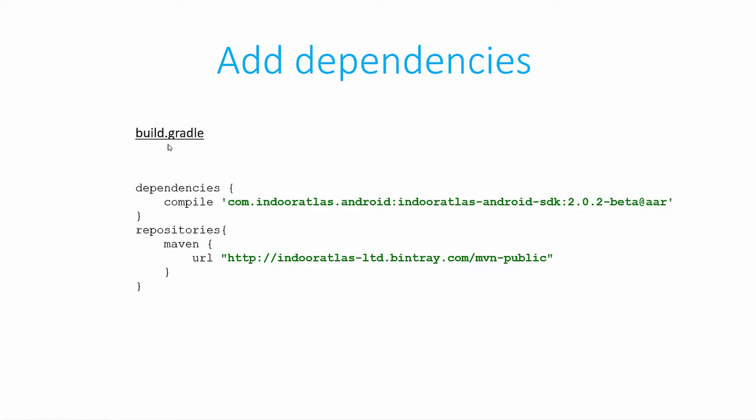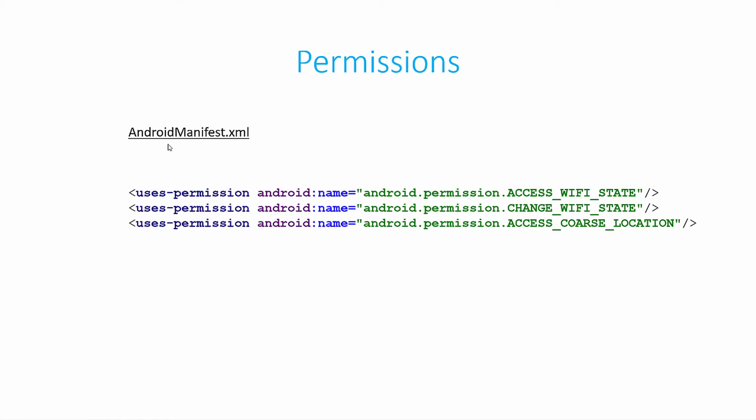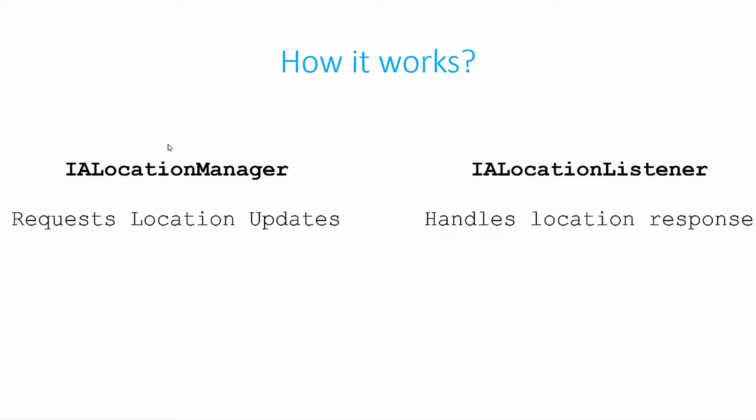Once you are done adding the dependencies, the last thing is to add the permissions. You need to add these three permissions to the Android manifest.xml file. So once you are done adding the API key and the secret, adding the permissions, and adding the dependencies to your project, you can start building your application by using the Indoor Atlas API.